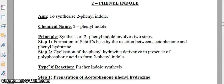The aim of this experiment is to synthesize 2-phenyl indole. The chemical name is 2-phenyl indole. The principle involves two steps. Step 1: formation of a C-base by reaction between acetophenone and phenylhydrazine. Step 2: cyclization of the phenylhydrazine derivative in the presence of polyphosphoric acid to form 2-phenyl indole. The type of reaction is Fischer indole synthesis.